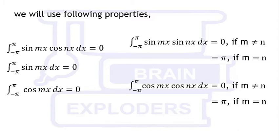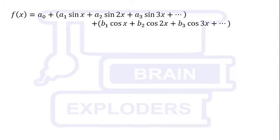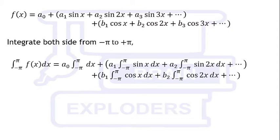Let f(x) be any function which can be expanded in the series of sines and cosines with some constant coefficients as shown on the screen. Write f(x) = a₀ + a₁sin(x) + a₂sin(2x) and so on, plus b₁cos(x) + b₂cos(2x) and so on.